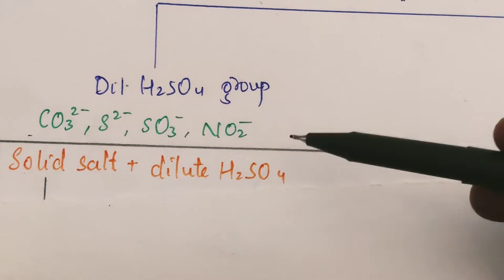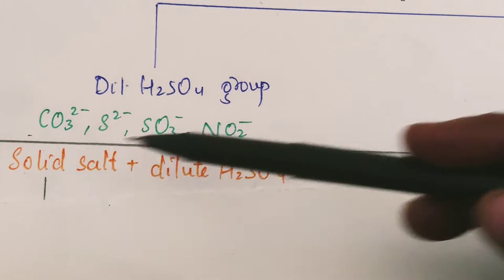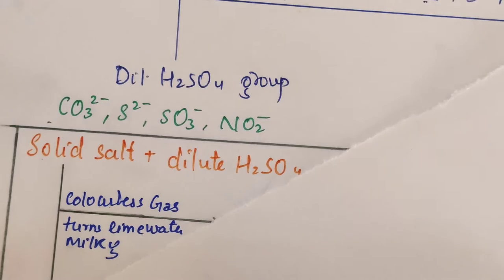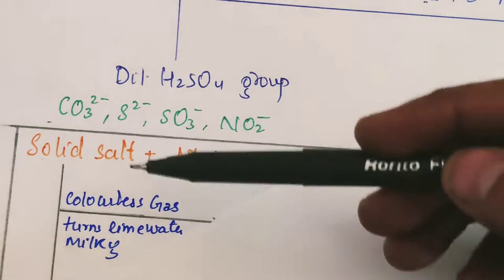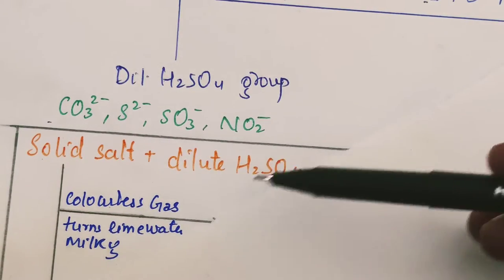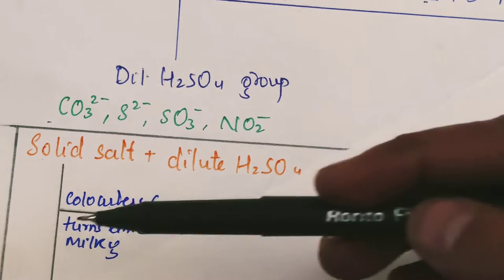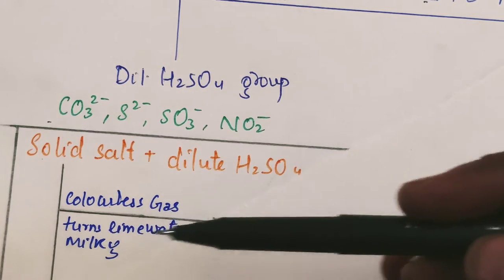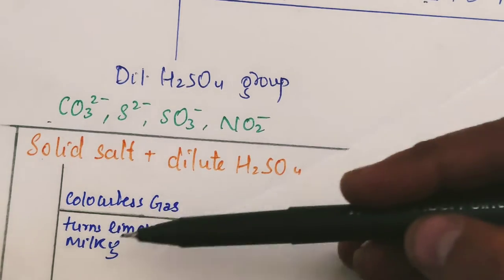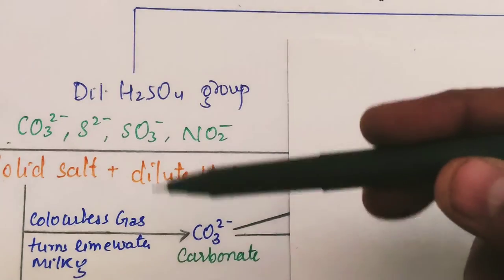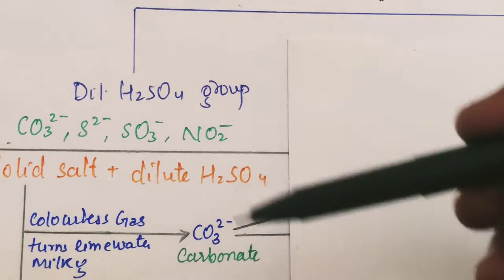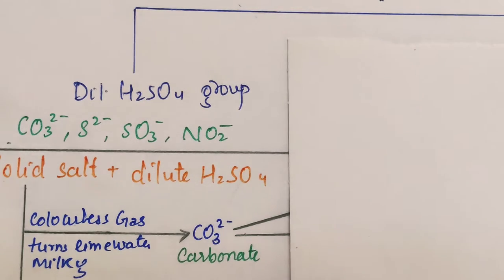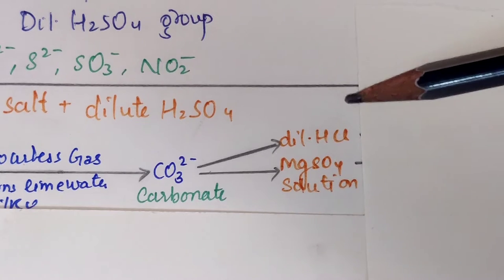The first step for anion analysis: take a solid salt and add dilute H₂SO₄. There are five possible observations. In the case of carbonate, if a salt contains carbonate and we add dilute H₂SO₄, there is evolution of a colorless gas which turns lime water milky. We know carbon dioxide is the gas evolved that turns lime water milky, so from this observation we can infer that the salt contains carbonate ion.